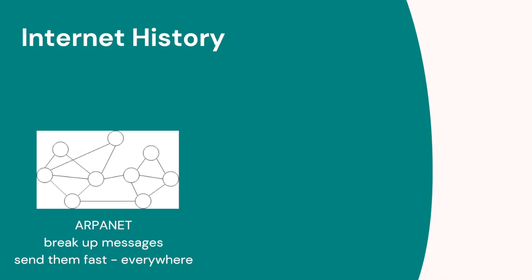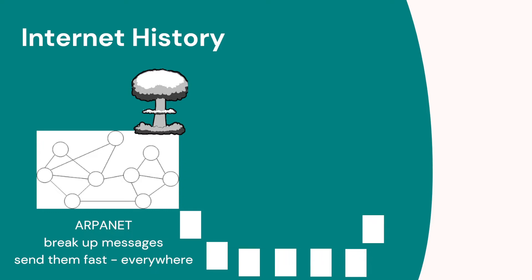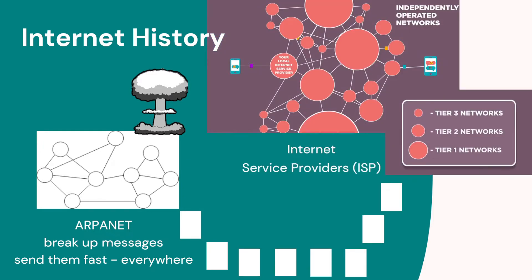Nobody really owns the Internet or created the Internet — it was developed over time. There were some research projects, including an American defense project called ARPANET, and the idea here was they wanted to break up messages and send them very fast in different locations, in case there was a nuclear attack. Over time we've seen different changes and the Internet has grown. We now have Internet service providers that range from big communication companies that own and maintain the really large cables and connections all around the world — we call this the Internet backbone — to the smaller Internet service providers that provide the Internet for your home, for example.